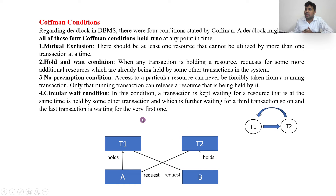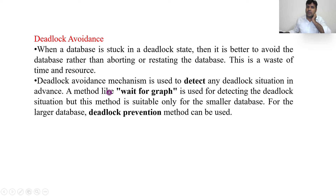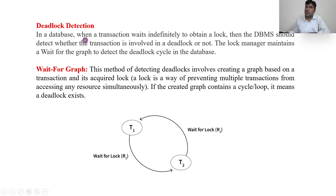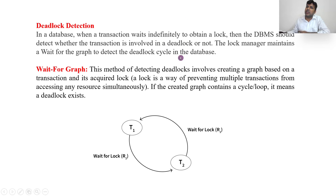To handle deadlock, we have two main approaches: deadlock avoidance using deadlock detection and deadlock prevention. Deadlock detection uses the wait-for-graph method. When the database is very small, deadlock detection is better; when the database is large, deadlock prevention is better. In deadlock detection, when a transaction waits indefinitely to obtain a lock, the DBMS detects whether it is involved in a deadlock using the wait-for-graph method.